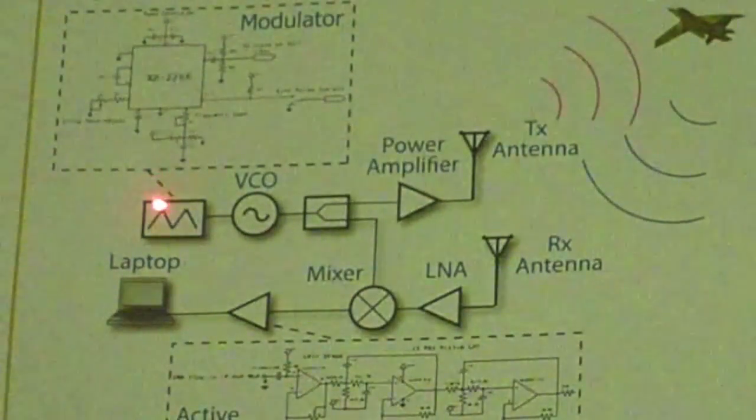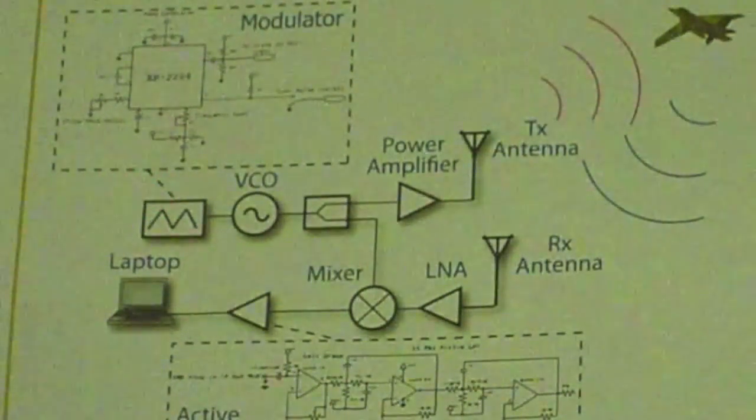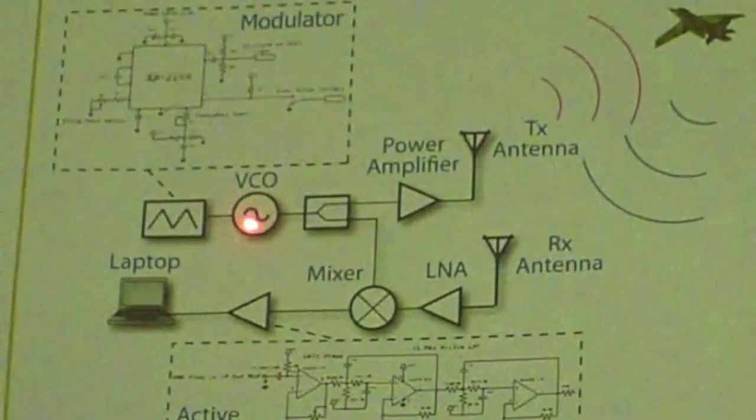Hi, my name is Jonathan and now we'll be presenting the principles of our radar design project. Here we have the modulator which outputs a triangle wave to control the VCO, which stands for voltage controlled oscillator.